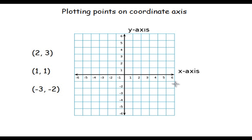Axes which is right to the centre of the coordinate axis is the positive x-axis, and the axis which is to the left is the negative x-axis.